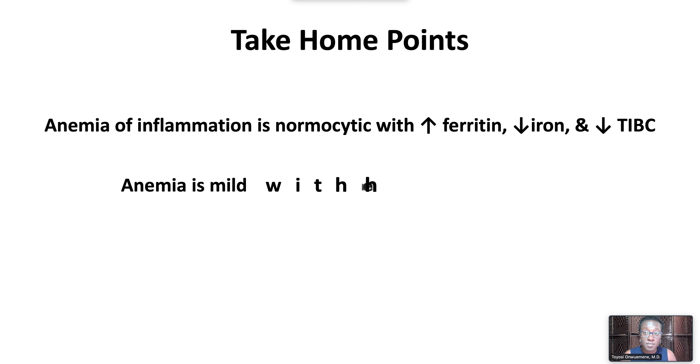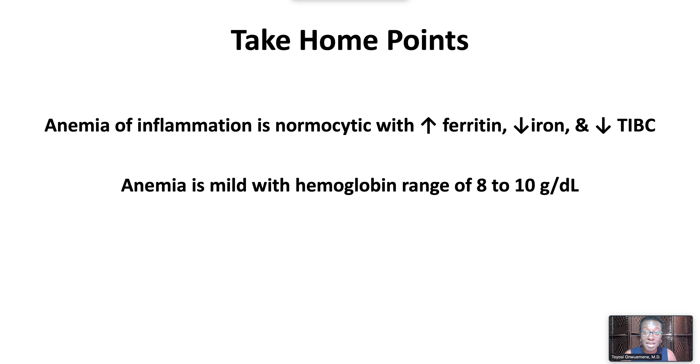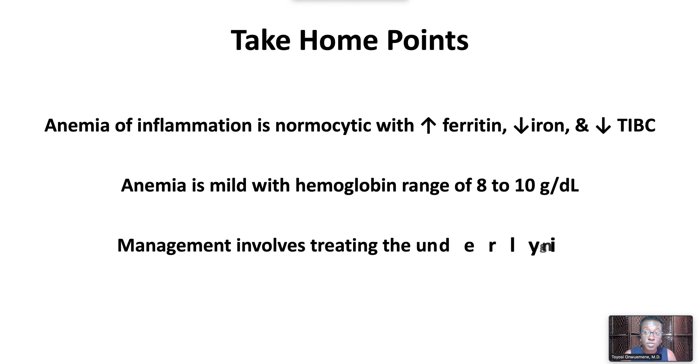The anemia is typically mild with a hemoglobin range of 8 to 10 grams per deciliter. Management involves treating the underlying disorder.